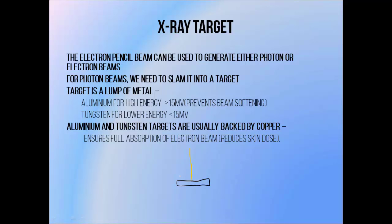If we want to use the pencil beam to generate a photon beam we need to force it to undergo the Bremsstrahlung interaction, so we make it collide with an x-ray target which is essentially a chunk of metal. The Bremsstrahlung interaction becomes more likely as the atomic number of the material increases, so you get more photons per electron with higher atomic number materials. We often use high atomic number materials like tungsten for x-ray targets, which is also a good choice because it is quite durable, and the electron beams used to generate photon beams are quite intense and can cause a lot of damage to soft materials.